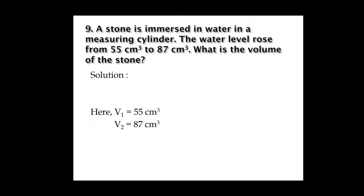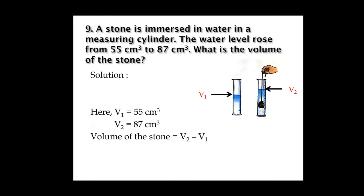This will be easier if you look at the picture. V1 is the volume before submerging the stone, and V2 is the new volume after. To find the volume of the stone, we subtract: Volume of stone = V2 − V1. We use V2 minus V1 because V2 is greater than V1 after the stone raises the water level. Substituting: 87 − 55 = 32 cubic centimeters.